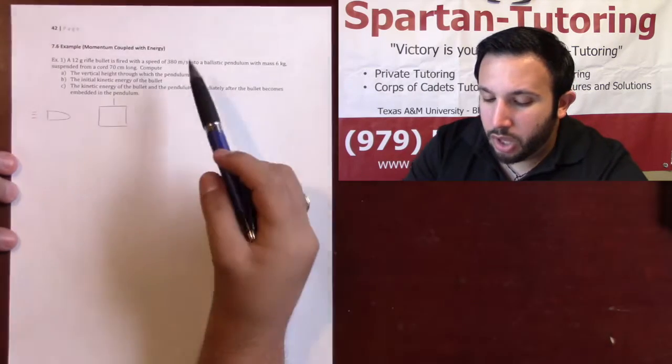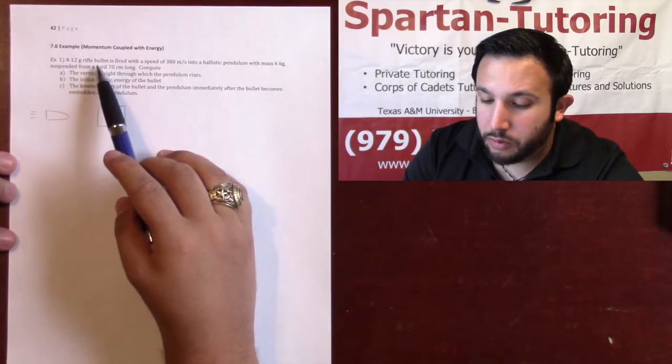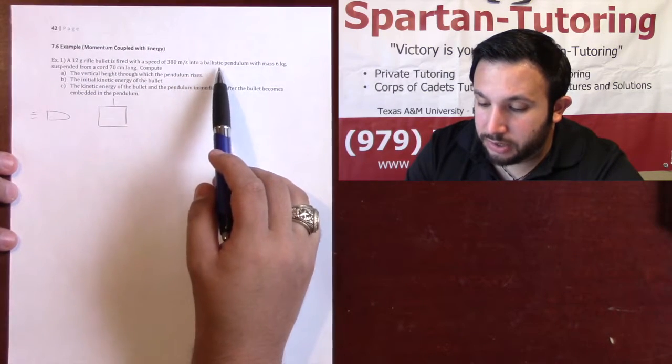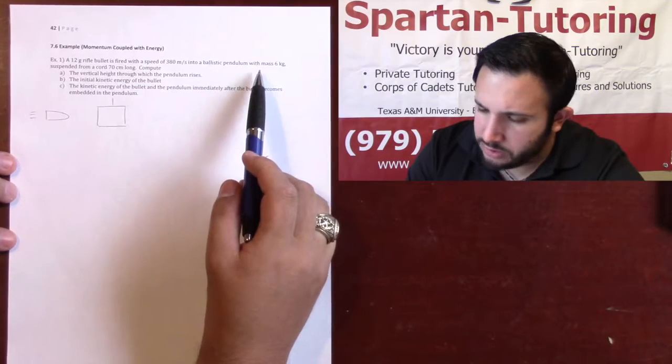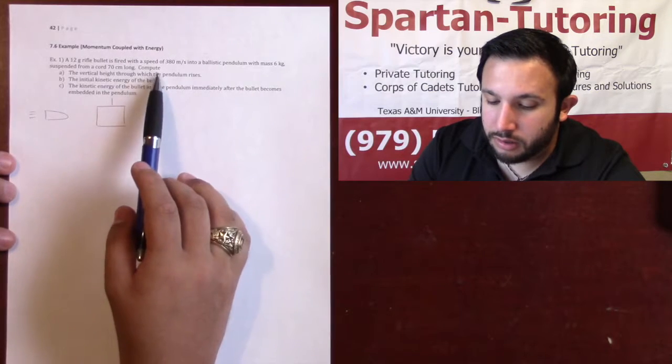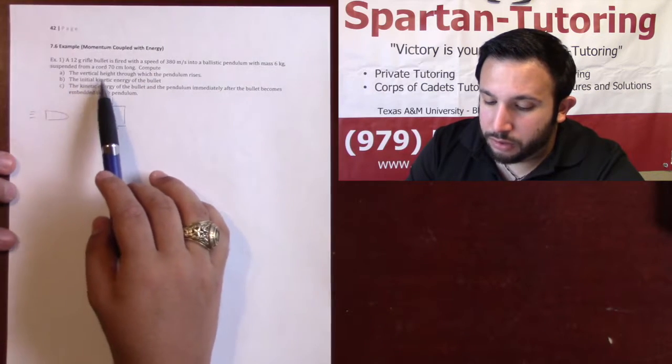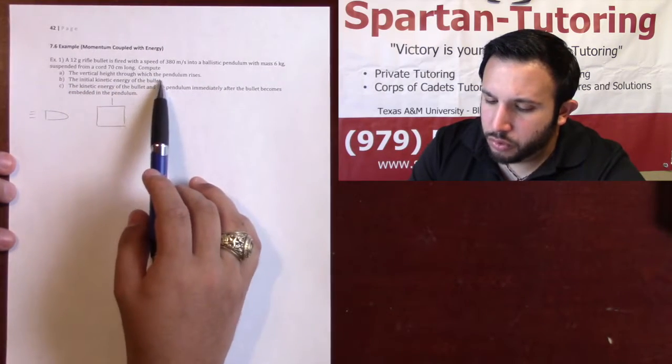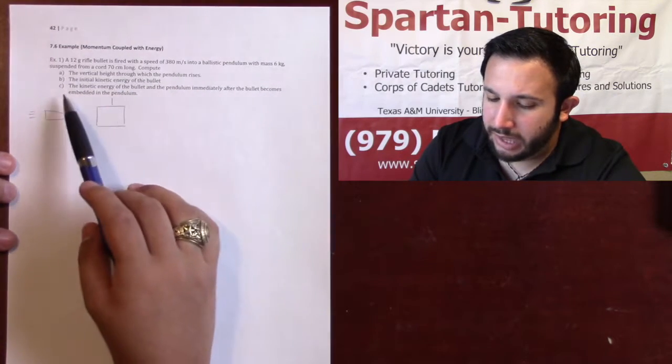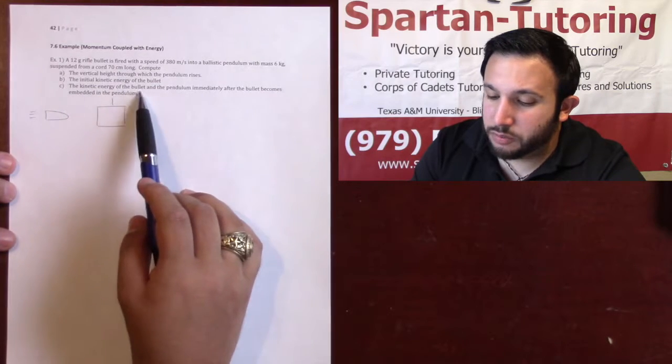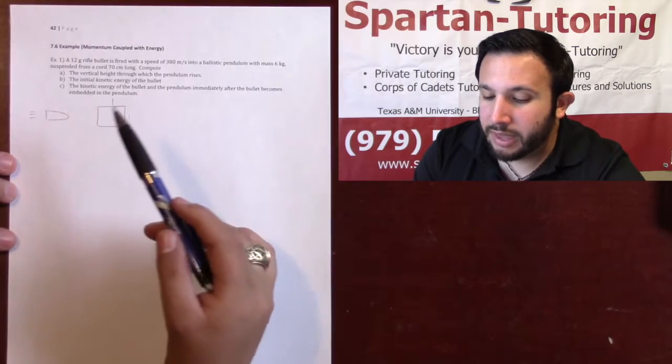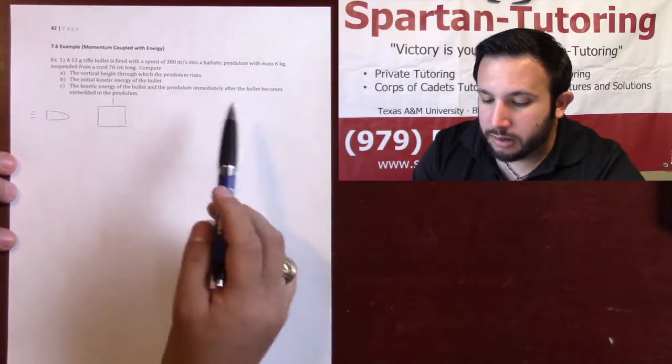So let's take a look at this problem. What I've got is a 12 gram rifle bullet is fired with a speed of 380 meters per second into a ballistic pendulum with a mass of 6 kg, suspended from a cord 70 cm long. Compute A, the vertical height through which the pendulum rises, B, the initial kinetic energy of the bullet, and C, the kinetic energy of the bullet and the pendulum immediately after the bullet becomes embedded into the pendulum.